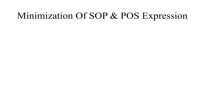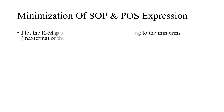To minimize the SOP and POS expression, we have to follow certain steps. The first step is to plot the KMAP and place ones or zeros corresponding to the min terms or max terms of the SOP or POS expression. In the case of SOP expression, place ones in the corresponding cells; in the case of POS expression, place zeros in the corresponding cells.